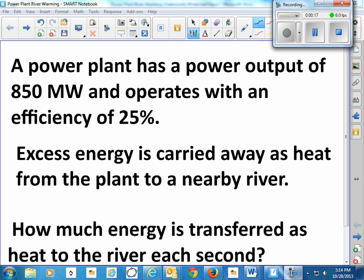Let's say it's an 850 megawatt power plant operating with an efficiency of 25%. The nearby river is used to carry away excess heat. How much heat is transferred to the river each second?